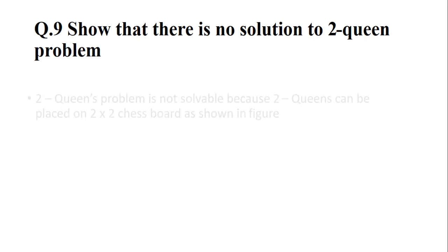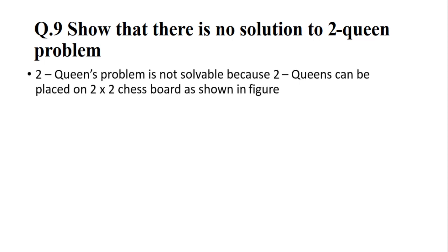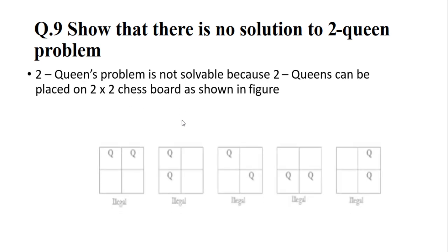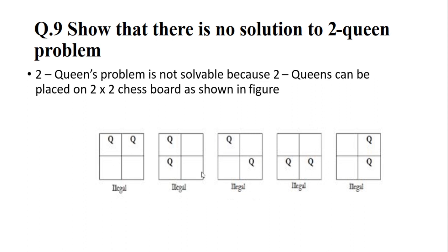Question 9: Show that there is no solution to the 2-Queens storage problem. We know the rules while arranging queens on a board: no two queens can be in the same row, same column, or diagonal. The 2-Queens problem has no solution because two queens cannot be placed such that all these positions are illegal — as per the rule we cannot arrange them in the same row, same column, or diagonal direction. So there is no solution to this problem.